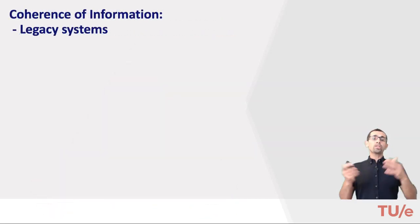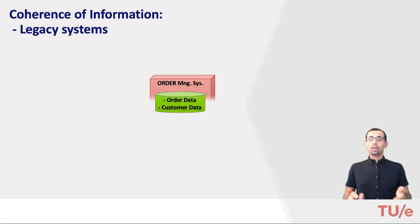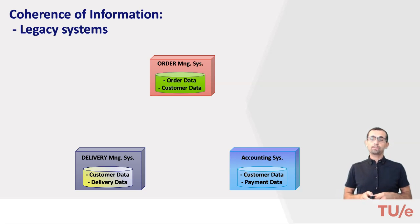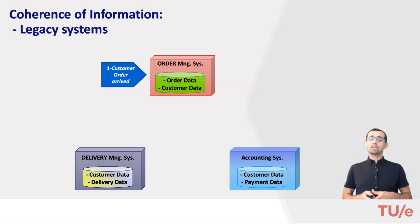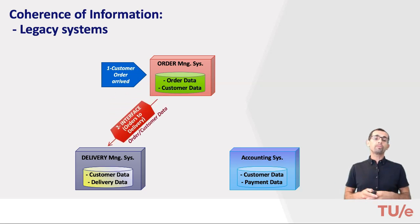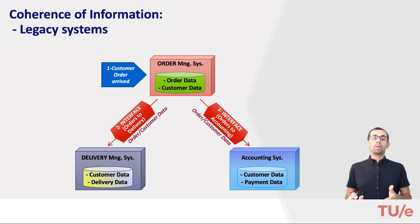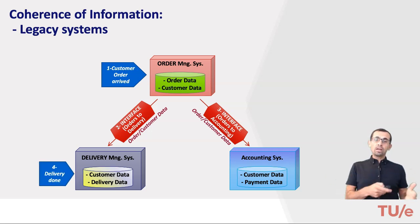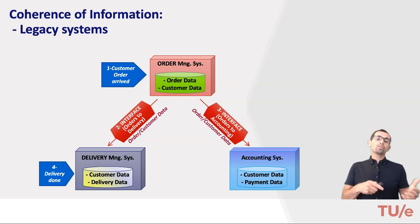Let's see how information silos work and how they create problems. Each department or function has its own information system, and some data has to be stored multiple times in different systems. When a customer order arises, it is registered in the order management system. Next, this information — the order and customer details — has to be transferred to the delivery system and also to the accounting system, so that accounting knows to expect a payment at some point in the future. When the delivery is done, it is registered in the delivery system and this information has to be forwarded to the accounting system so that it knows payment should be received for this order.